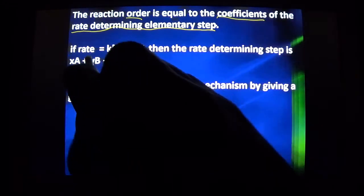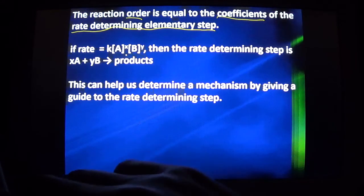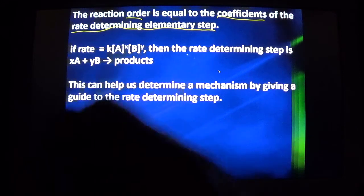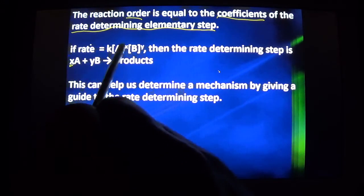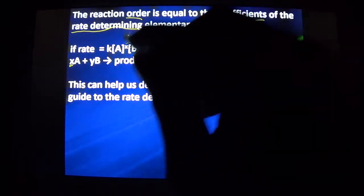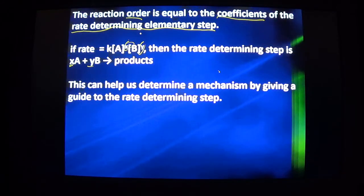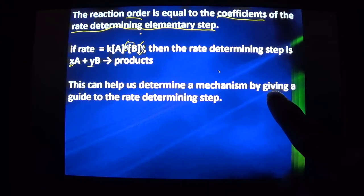The order is equal to the coefficients of the rate determining elementary step. I did not say overall balanced equation. I said of the individual rate determining elementary step. So if my rate is this, I know of the rate determining step, the slow step, that x and that x match, and that y and that y match.